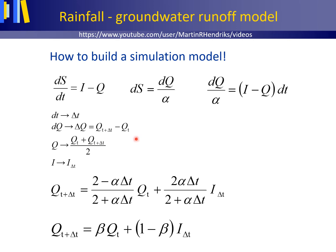How to build a simulation model? We can change this equation to a simulation equation for a rainfall groundwater runoff model that uses discrete time steps delta t to model changes through time, by replacing dt by delta t, dQ by delta Q, delta Q being Q t plus delta t minus Q t, by replacing Q by Q t plus Q t plus delta t divided by 2,